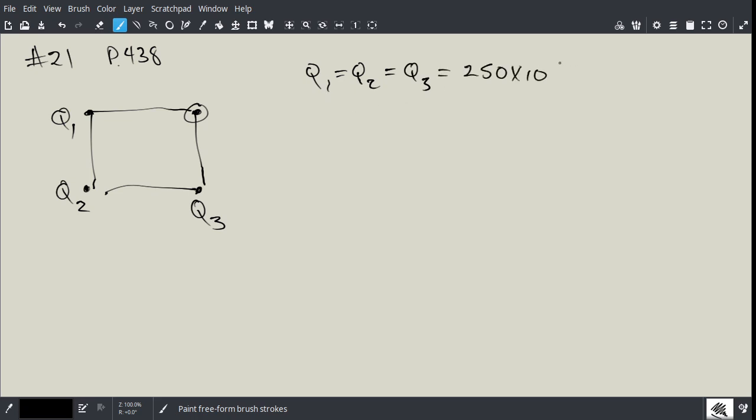This is Physics 12, number 21 on page 438. This question is asking for the electric field at the corner of a square. Let's pick this corner here, and it's due to these three charges. These three charges, so this is a square here. Let's call them Q1, Q2, and Q3. So Q1 is equal to Q2 is equal to Q3. All the Qs are equal, and they're equal to 250 times 10 to the power of negative 7 coulombs.